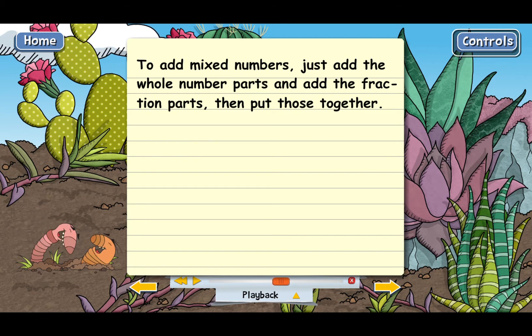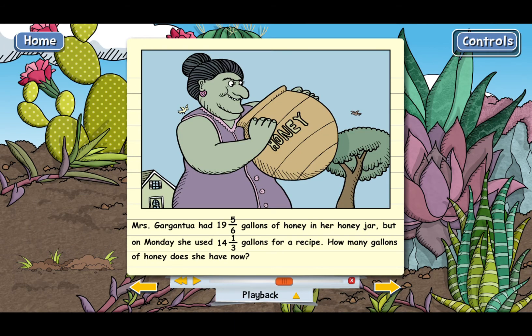What about subtracting two mixed numbers? Let's look at an example like that. Mrs. Gargantua had 19 and five-sixths gallons of honey in her honey jar. But on Monday, she used 14 and one third gallons for a recipe. How many gallons of honey does she have now?